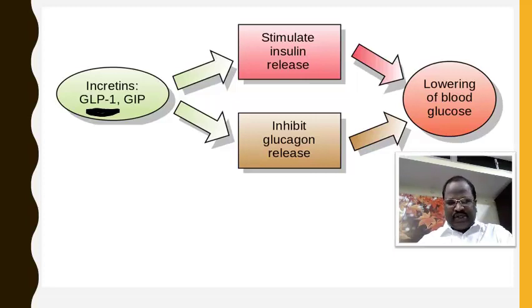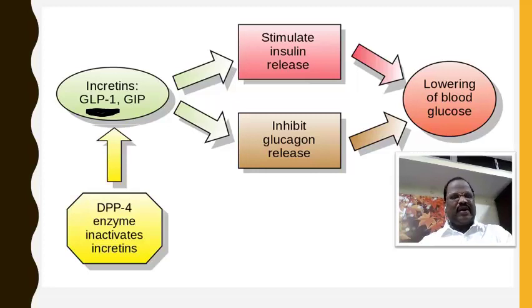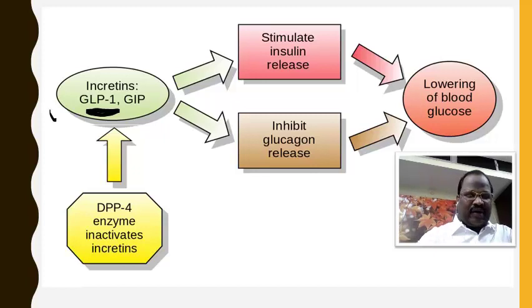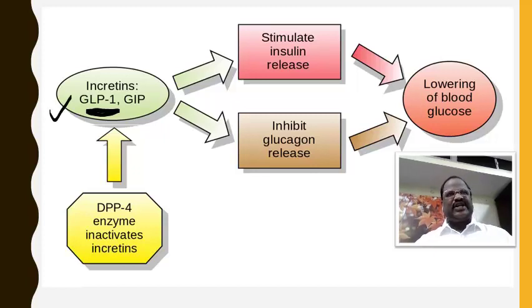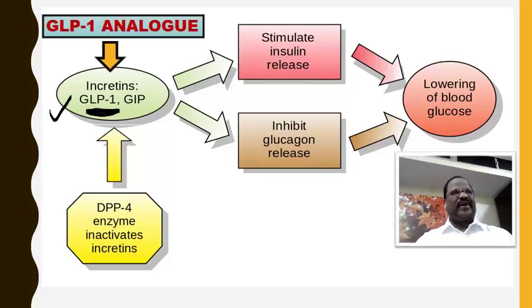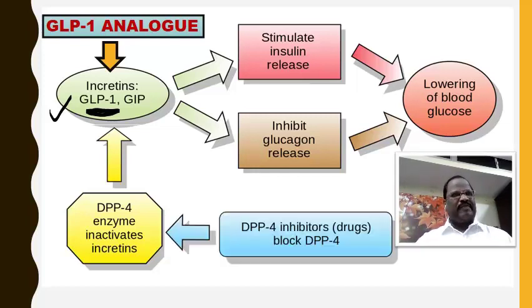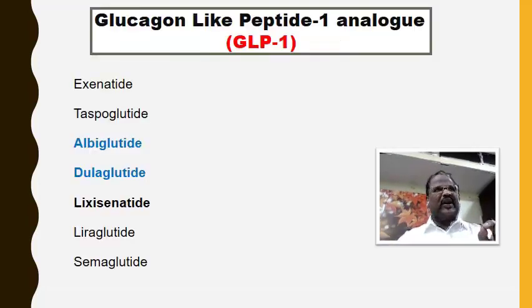But natural GLP undergoes inactivation by an enzyme called dipeptidyl peptidase-4 (DPP-4). So what we do — we want to have GLP-1 analogs which are resistant to DPP-4. They are called GLP-1 analogs. We also have another group of drugs called DPP-4 inhibitors. First we are going to cover GLP-1 analogs.